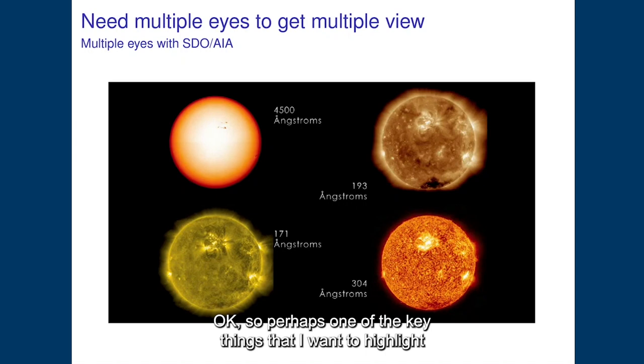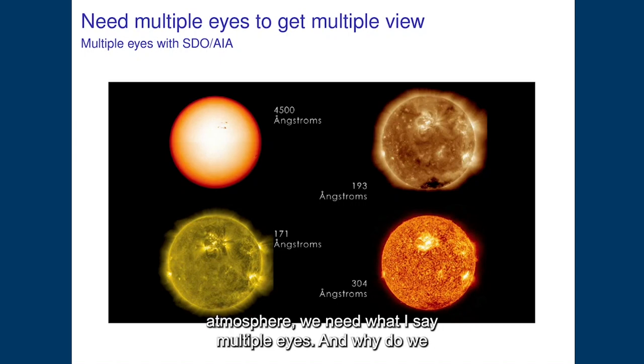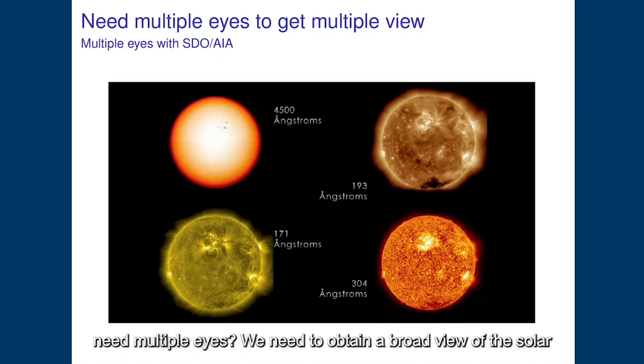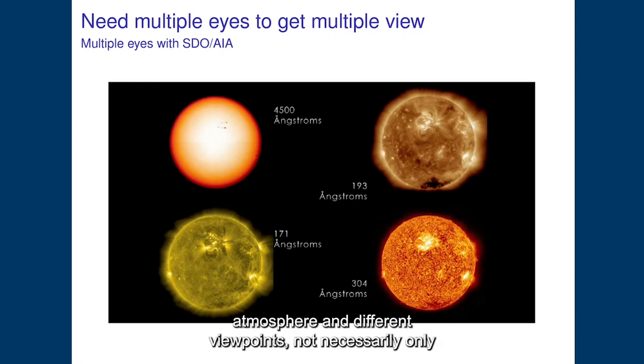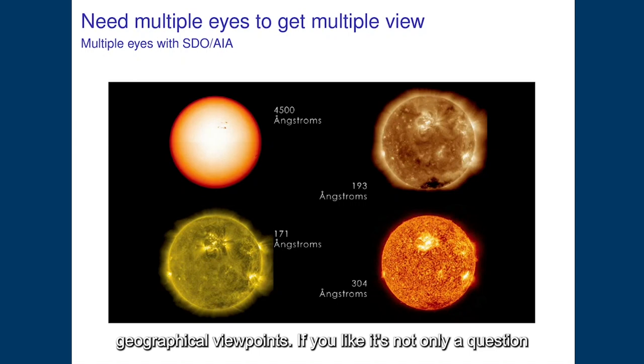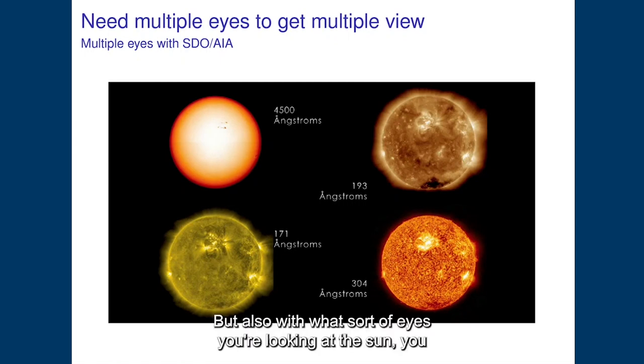So perhaps one of the key things that I want to highlight to start with is that in order to be able to study the solar atmosphere, we need what I say multiple eyes. And why do we need multiple eyes? We need to obtain a broad view of the solar atmosphere and different viewpoints, not necessarily only geographical viewpoints, if you like. It's not only a question of where the observer is based, but also with what sort of eyes you are looking at the Sun.